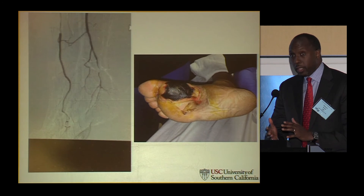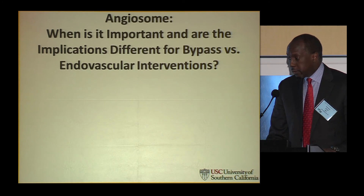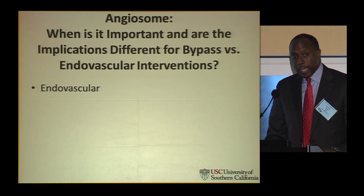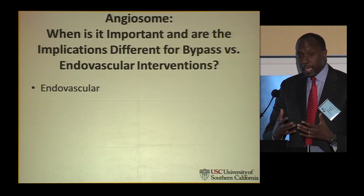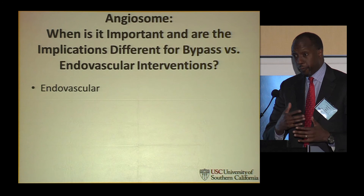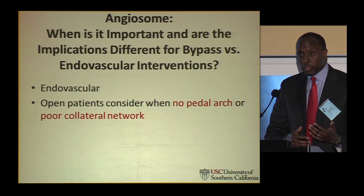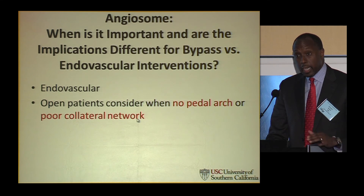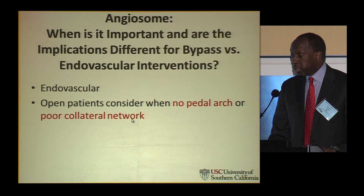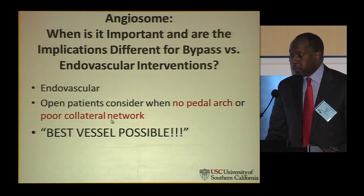I think this is somewhere I veered out of what the literature, as cloudy as it is, could support. For endovascular, I do think angiosome targeting is important, though the prospective study is underpowered. For open surgery, especially in patients with diabetes and end-stage renal disease who have a compromised pedal arch or poor collateral network, you should consider using the angiosome concept. And finally, bottom line: if there's nothing else, just take the best vessel possible. Thank you.